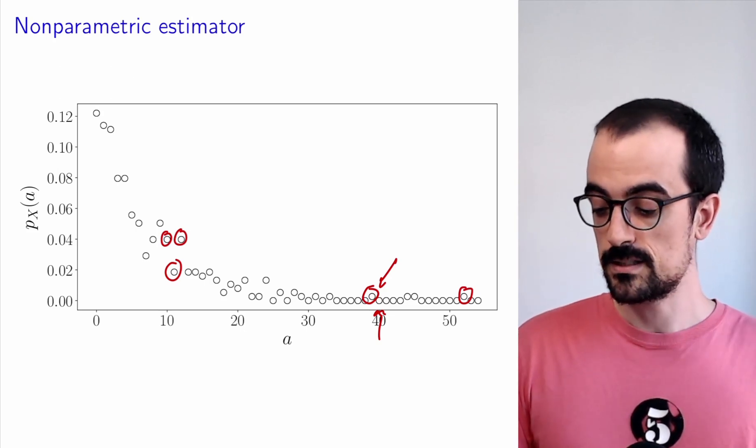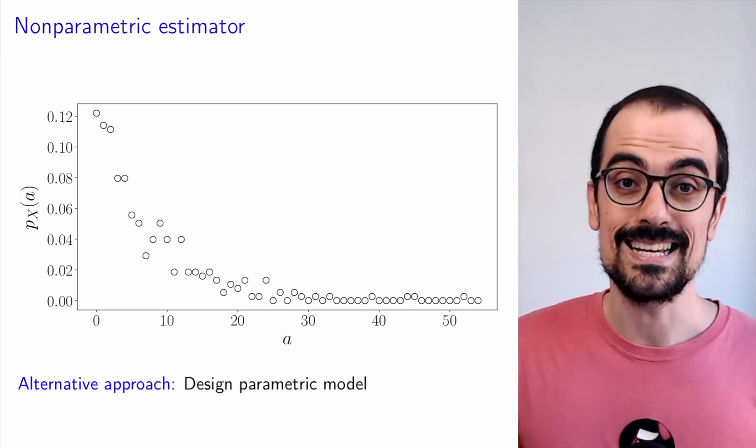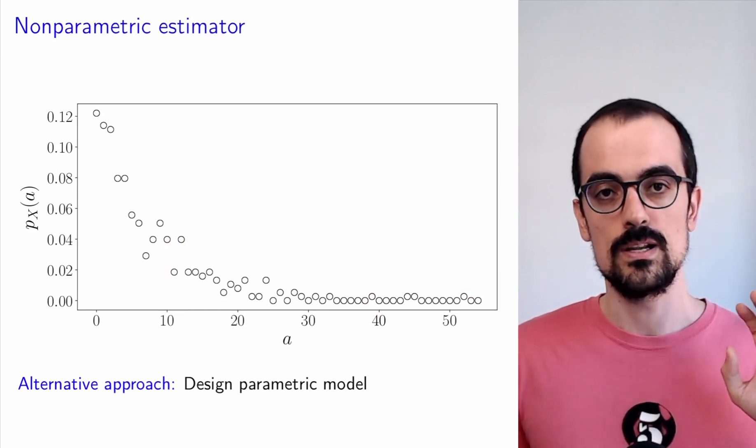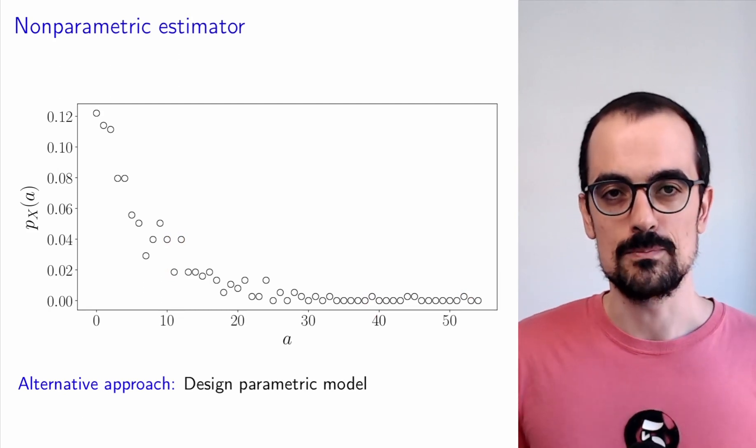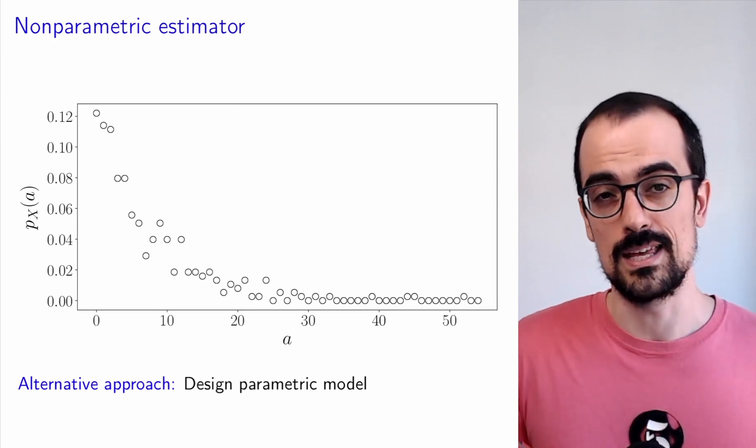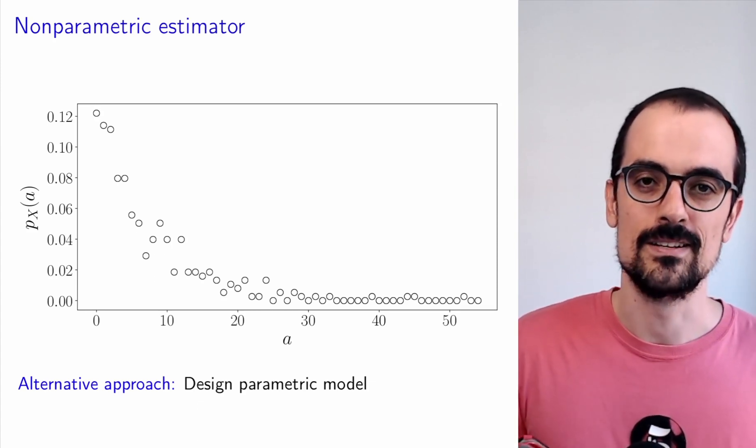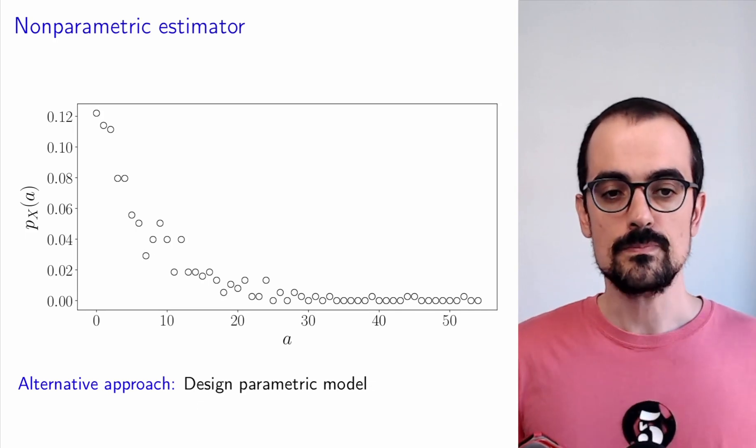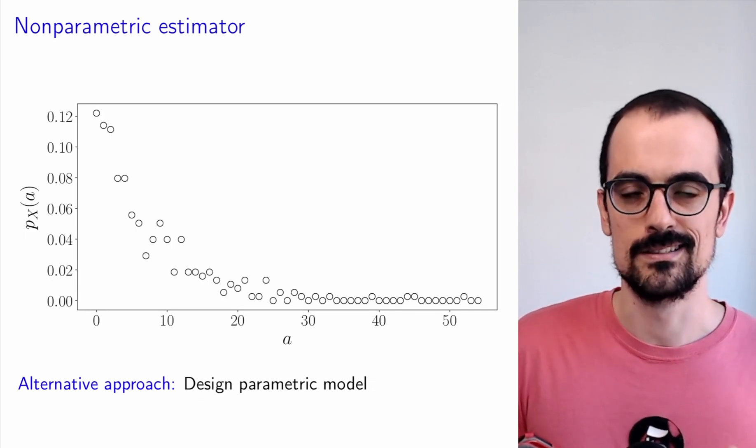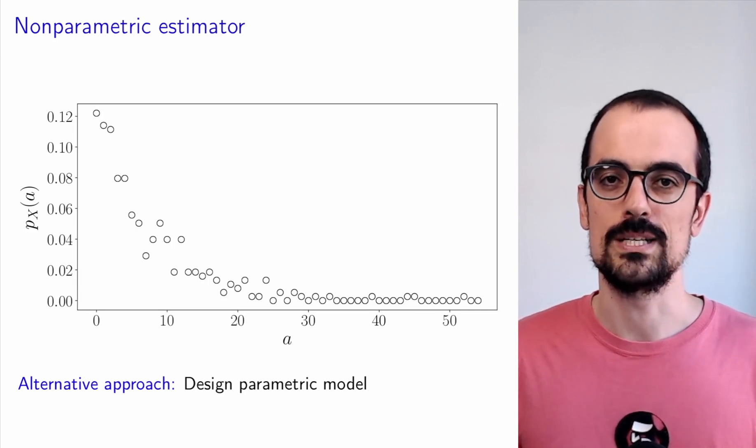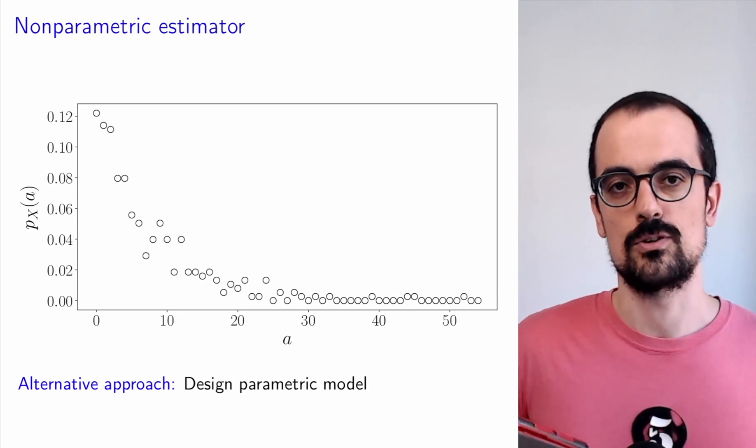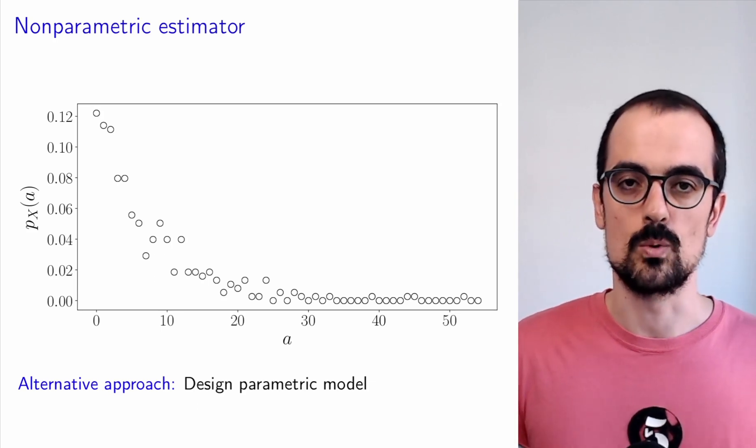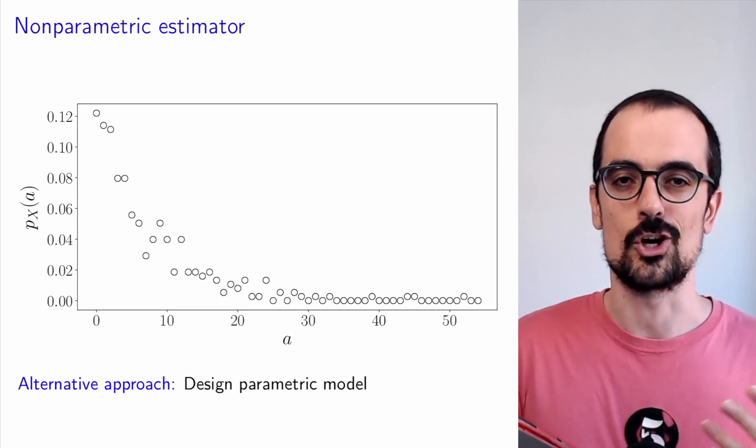In order to address this, a possibility is to design a parametric model where we will incorporate assumptions that we think might hold for our particular situation using our expertise. This will allow us to constrain the PMF so that we have to estimate less parameters, and therefore the estimate will be more stable when we have less data. That's the logic for using a parametric model.